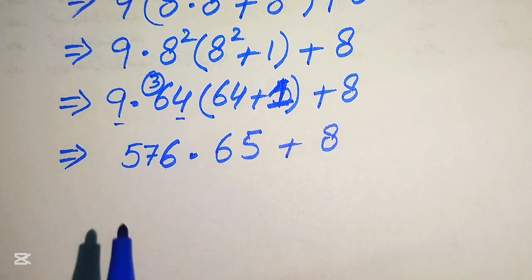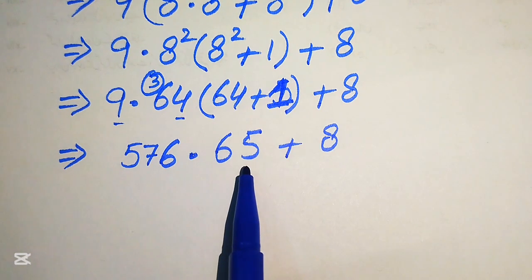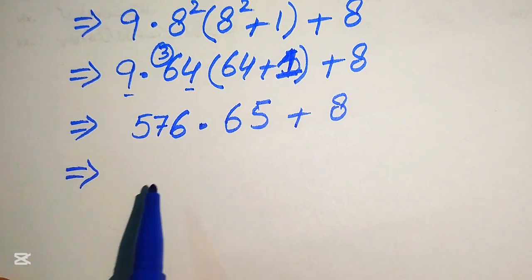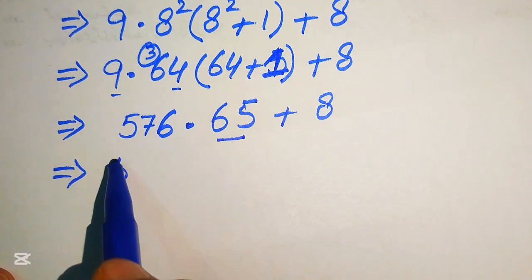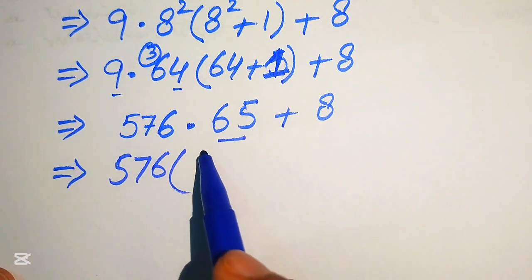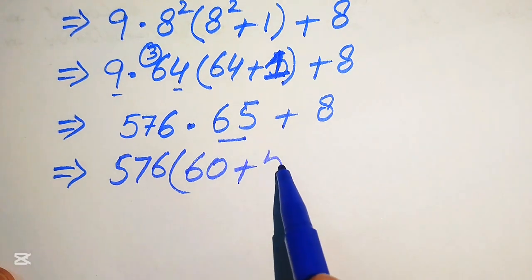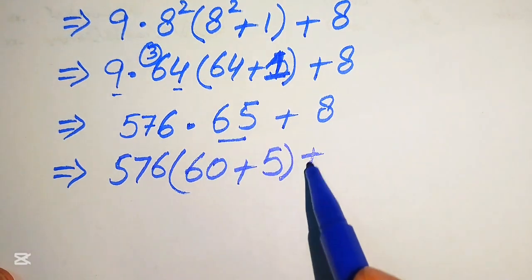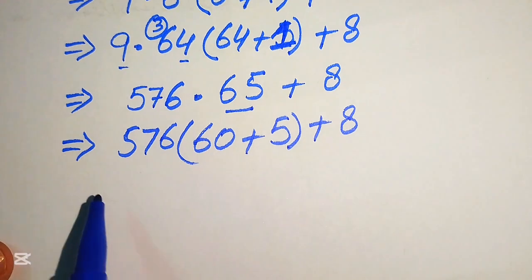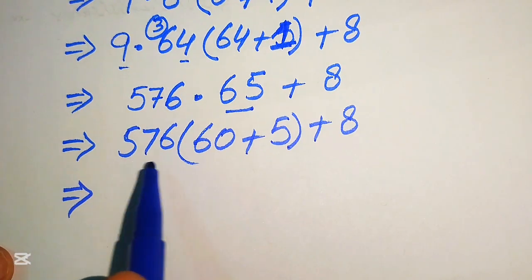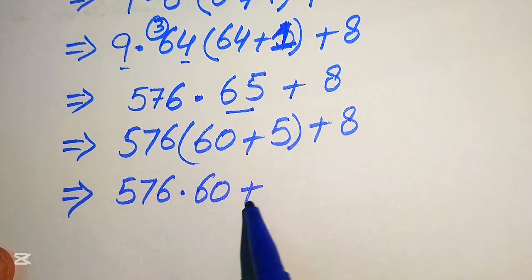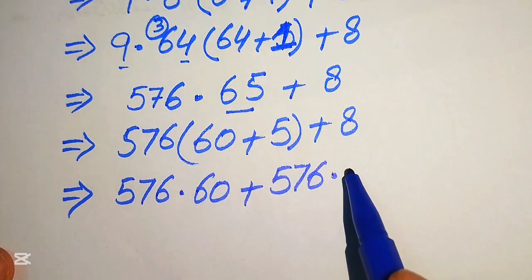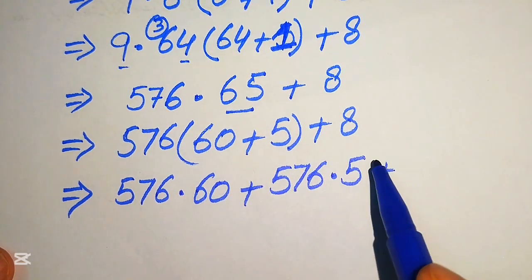Our next target is to multiply 576 by 65. We use a nice trick and rewrite 65 as 60 plus 5. So the expression becomes 576 multiplied by 60 plus 576 multiplied by 5, plus 8.